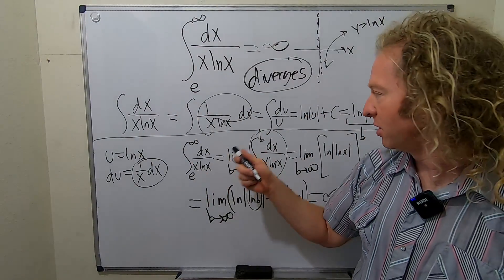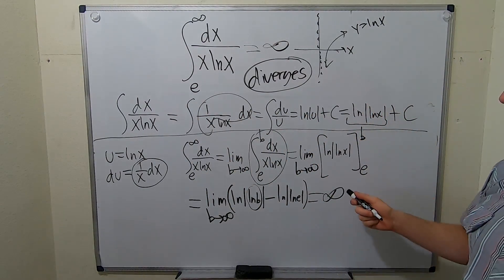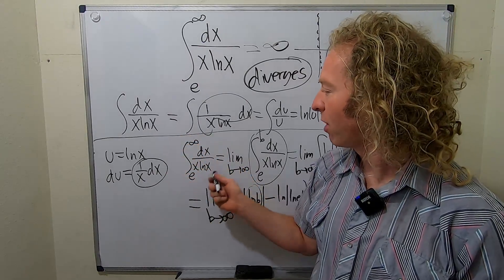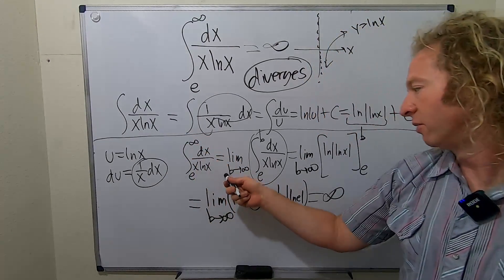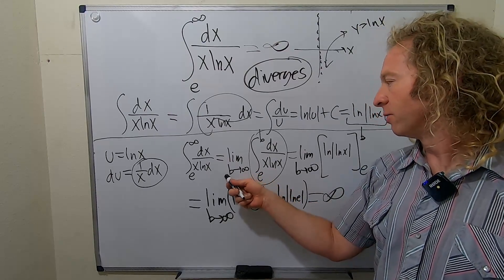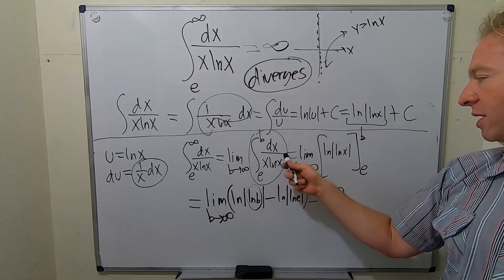And we got the answer. This is the indefinite one. Then we decided, okay, let's do the actual problem. So when you're doing the problem, you basically always replace your infinity with a letter. So I like to use b, so b goes to infinity. We work this out to get this.